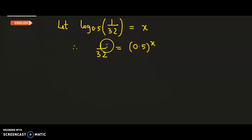Now if we observe carefully, 1 by 32 could be expressed as half raised to 5, and on the right side 0.5 is nothing but half, that is 1 by 2 raised to x.